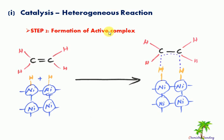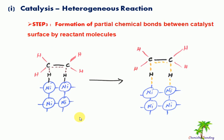Step two: formation of the active complex. The hydrogen molecules adsorbed on the nickel solid surface partially bond with the ethylene carbon atoms. This creates partial chemical bonds between the catalyst surface and the reactant molecules, forming an activated complex.